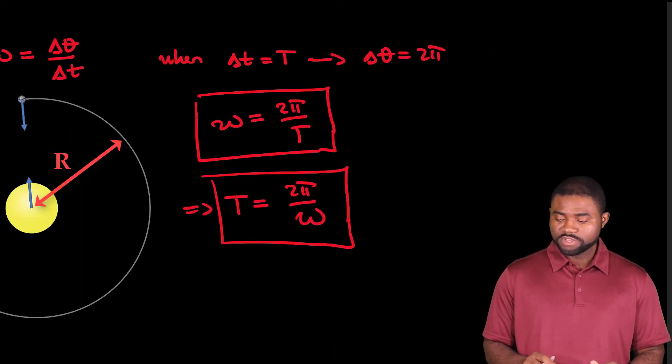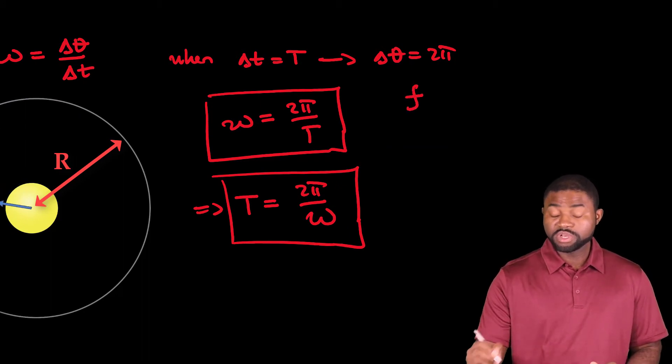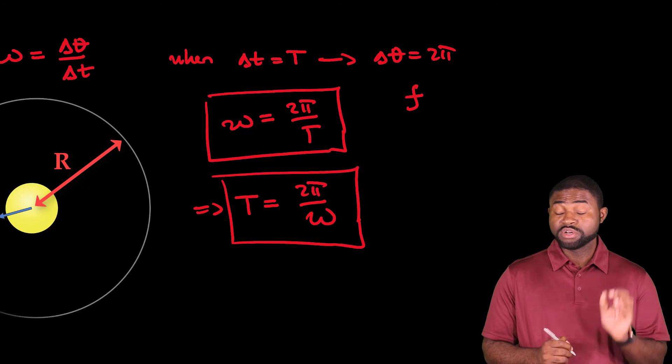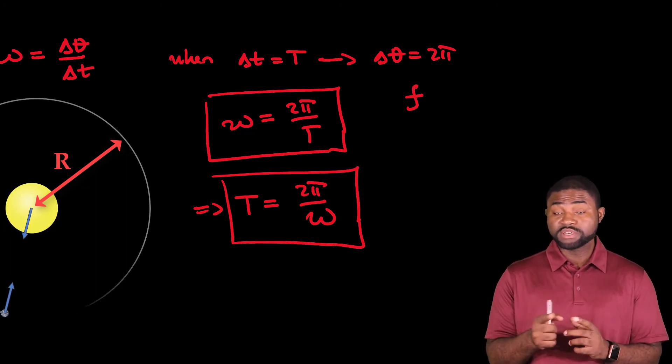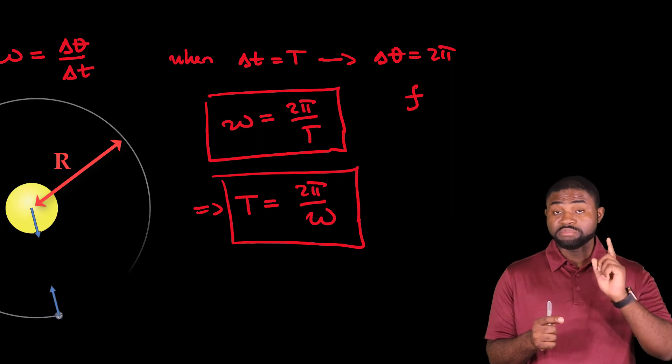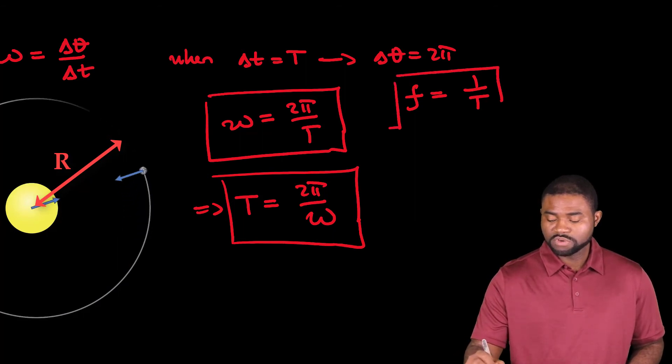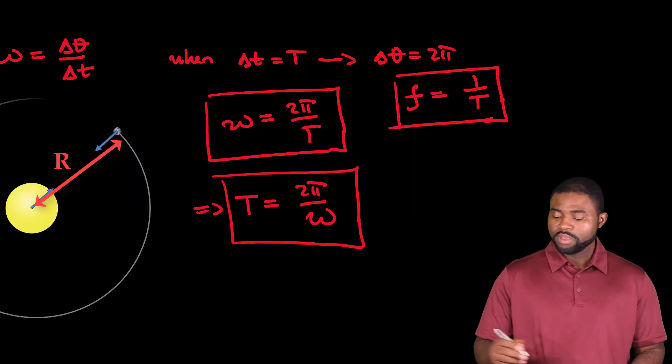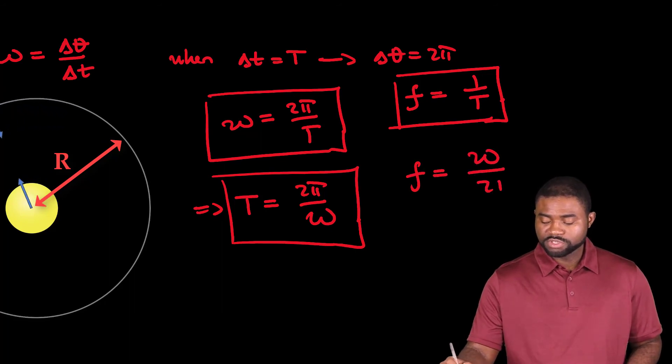Now, the next thing that I would like for us to talk about is the frequency. The frequency, which is small f, measured in hertz, is defined as the number of circles that particular object can make per second. In other words, the frequency is therefore equal to 1, the reciprocal of the period. So, f will be equal to Omega over 2 pi.